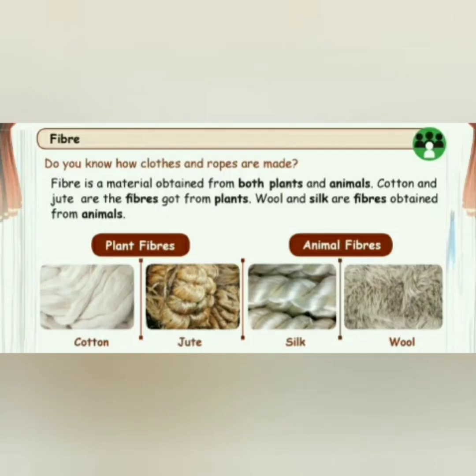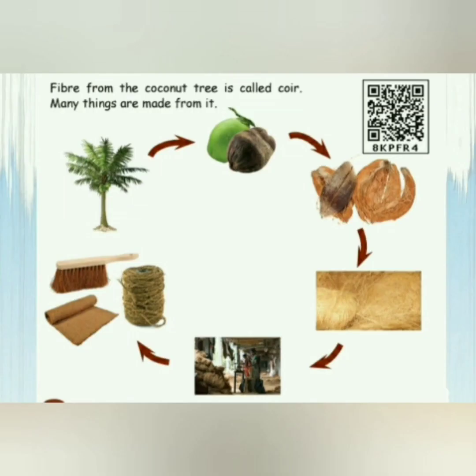Fiber. We wear different kinds of clothes daily. Do you know how clothes and robes are made? Fiber is a particular material which is obtained from both plants and animals. Cotton and jute are kinds of fibers we get from plants, while wool and silk are fibers obtained from animals. Fiber taken from a coconut tree is called coir, and we can make a lot of things using coir.